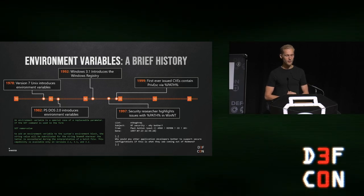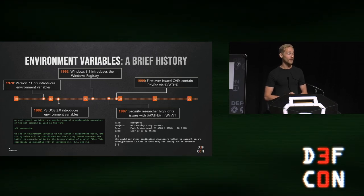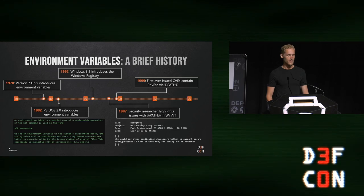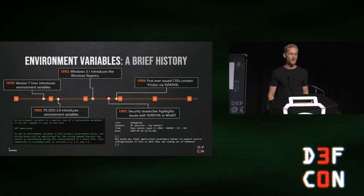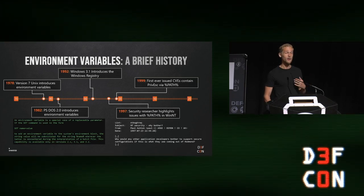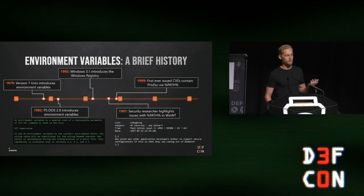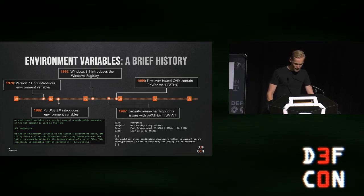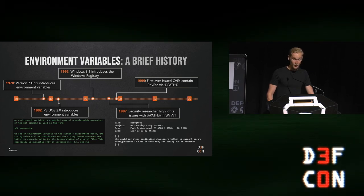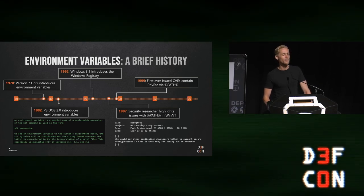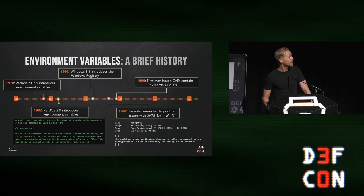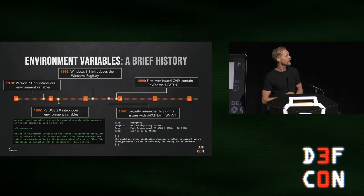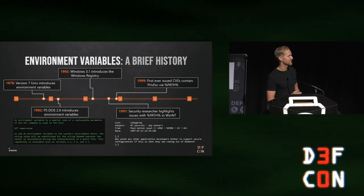At the end of the century, security researchers were already identifying issues with environment variables. Windows defines several out of the box — for example, the PATH environment variable caused lots of trouble and vulnerabilities. The earliest I could find was from 1997, a sysadmin complaining about Microsoft not implementing security properly, saying 'why would other application developers bother to support secure configurations if this is what they see coming out of Redmond?' And in 1999, the first ever CVEs were issued — the first batch actually included at least one environment variable-based security issue that led to privilege escalation.